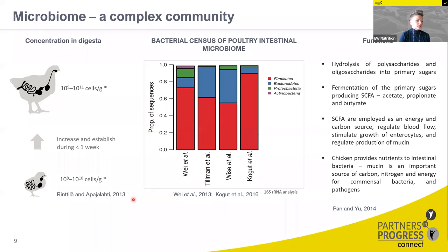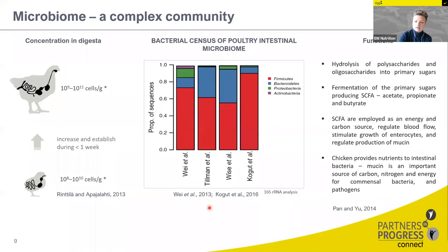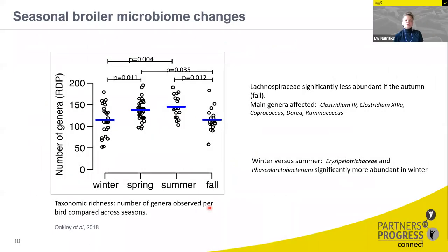There have been significant developments in how we analyze and detect microbiota. An older method from 2013 relied on culturing — using selective media to detect bacteria. A more advanced method is 16S rRNA analysis, which examines DNA or RNA composition. The advantage of sequencing is that it can detect a much larger number of bacteria present in the gut without needing to culture and grow live bacterial colonies.